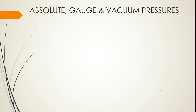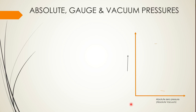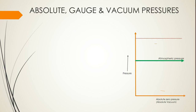Now let us look at absolute, gauge, and vacuum pressures using a graph. I will draw a horizontal line representing absolute zero pressure, also known as absolute vacuum. On the y-axis, pressure increases upward. The green line indicates atmospheric pressure, which has some value above zero.